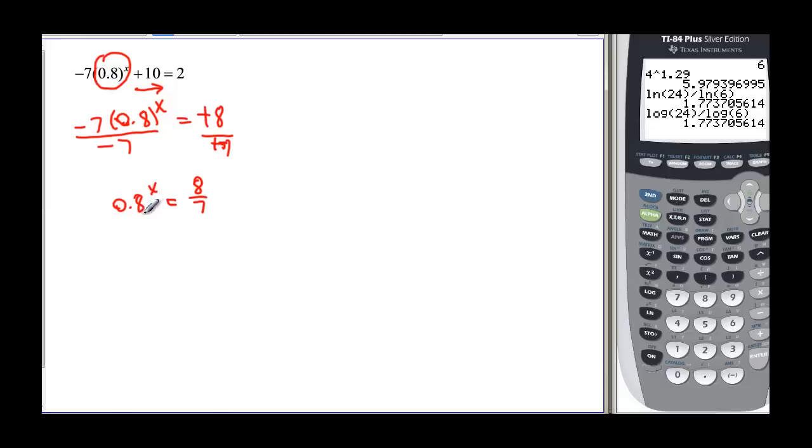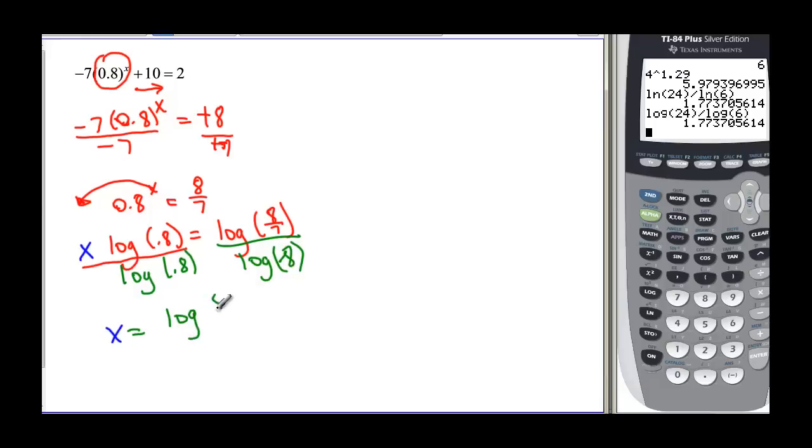So we take, and we want an exact answer. So we don't want to round anywhere that we don't have to. Let's take the x out front. x times the log of 0.8. Remember the x went out front so we don't have to write it again, equal to the log of 8 over 7. So we don't have the exact answer here. Divide both sides by the log of 0.8. So x is equal to log of 8 over 7 divided by the log of 0.8, which is approximately, but you don't have to say it. We're good here.